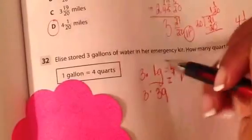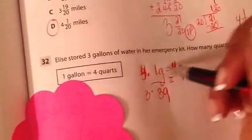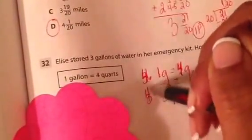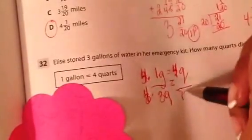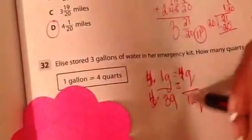So if 1 gallon equals 4 quarts, then 3 gallons, if I use my property of 1 again, 3 times 1 makes 3, 1 times 4 makes 4, 4 times 3, I have 12 quarts. So let's look and see if it's there. And there it is, choice D.